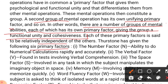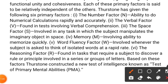Thurston has given the following six primary factors. First, the Number Factor (N): the ability to do numerical calculations rapidly and accurately. For example, when you go to the market and give cash to the shopkeeper and calculate change — that is numerical calculation. This basic ability of the number factor is present in every human being. Second, the Verbal Factor (V): found in tests involving verbal comprehension — the ability to understand verbal communication.